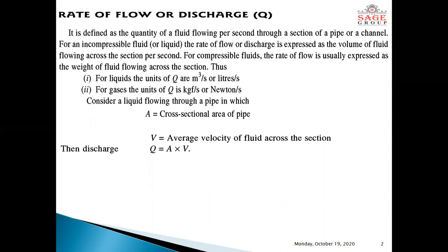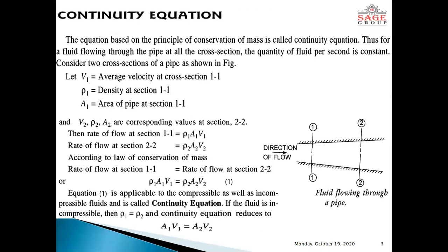Consider a liquid flowing through a pipe in which capital A is the cross-sectional area of the pipe and capital V is the average velocity of fluid across the section. Then, the discharge capital Q is equal to A into V.